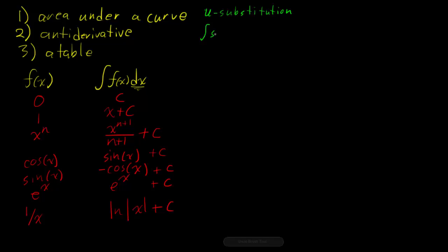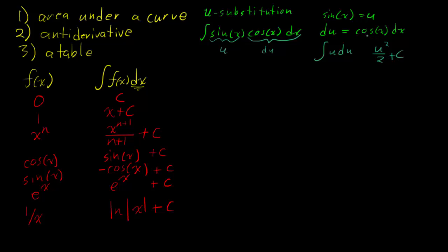For example, if I have the integral of sine x cosine x dx, then I can say that sine of x equals u. And then du equals cosine x. I can then say sine of x is u, and cosine of x dx is du. And that's easy to integrate. I just have u du. The integral of that is u squared over 2 plus c. And then I just plug my u right back in. And I get sine squared of x over 2 plus c. And there's my solution.